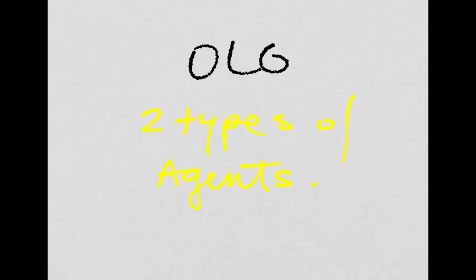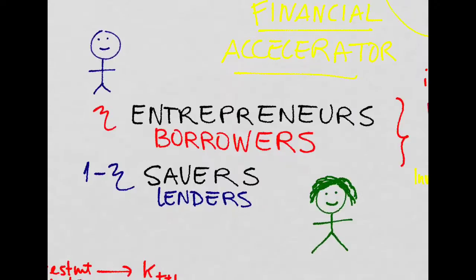So, let's take a look at the model of Bernanke and Gertler to see how they model this. They have a two-type OLG model with some entrepreneurs and also some savers. Entrepreneurs will borrow money, and there's this fraction of them, and then savers will lend money to the entrepreneurs, and this is a fraction of them.